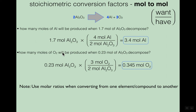Here's another example: how many moles of oxygen will be produced when 0.23 moles of aluminum oxide decompose? Start with 0.23 moles of aluminum oxide. The relationship between aluminum oxide and oxygen is a 2-to-3 ratio — two aluminum oxides going in, three oxygens coming out. Moles of aluminum oxide cancels on the bottom. Calculate: 0.23 times 3 divided by 2, and you get 0.345 moles of oxygen.